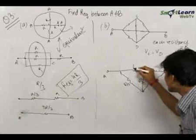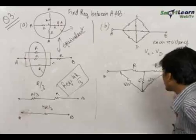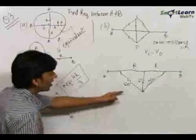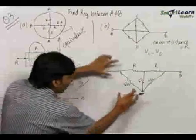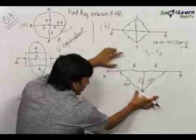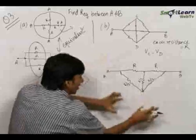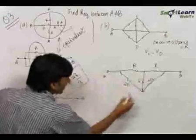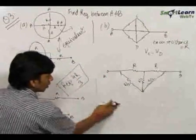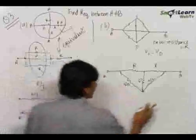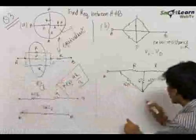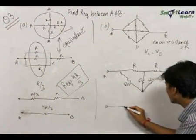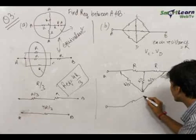Now this is equal to R and this is equal to R. You have to be very careful at every stage. Now what you have to look at here to solve this question very easily is that this is a Wheatstone bridge. You have to visualize this as a Wheatstone bridge. Let me redraw this so it will be easier for you to locate the Wheatstone bridge.